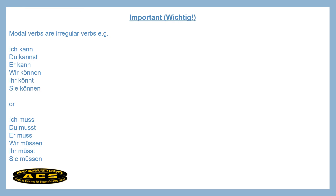The modal verbs are irregular verbs, so you will see that they are not conjugated the same way as regular verbs. For example, let's look at können and müssen. Können means 'can.' Conjugated: ich kann, du kannst, er kann.